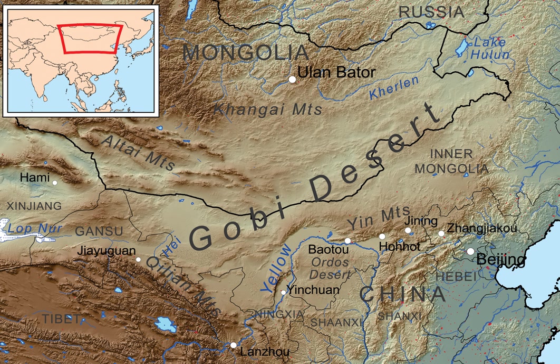Some geographers and ecologists prefer to regard the western area of the Gobi region — the basin of the Tarim in Xinjiang and the desert basin of Lop-Nor and Hami Kumul — as forming a separate and independent desert, called the Taklamakan Desert.